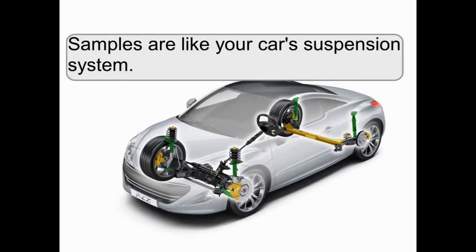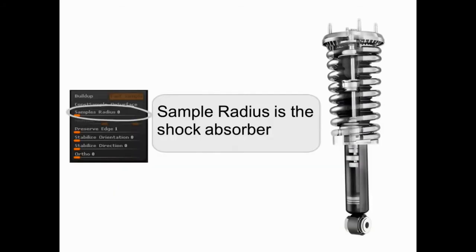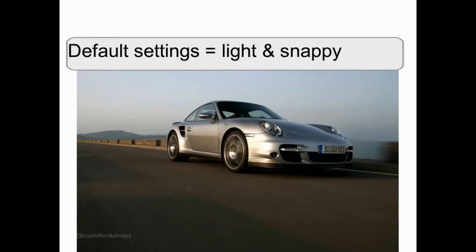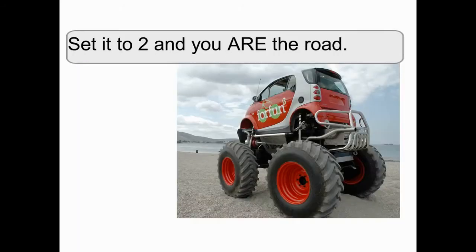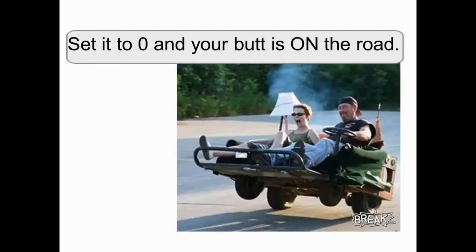Samples are like your car's suspension system. They are designed to handle how ZBrush is going to respond to the surface of your model. The core feature is Sample Radius, and this acts as the shock absorber of the system. Its default settings are usually light and snappy. Set it to 2 and you are the road. Set it all the way to 0 and your butt is on the road.